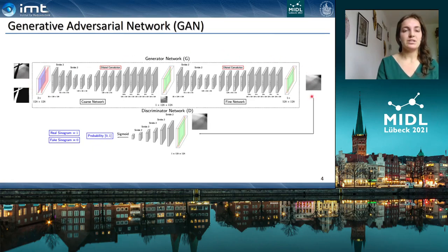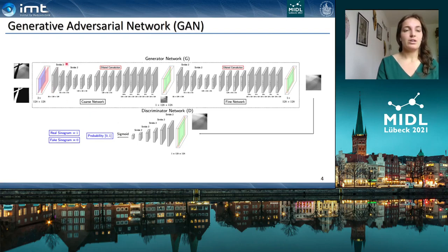The output of the generator is then used as input to the discriminator, which assigns a probability between 0 and 1 whether it's a real sinogram or a fake sinogram. The generator consists of a two-stage architecture: a coarse network and a fine network.